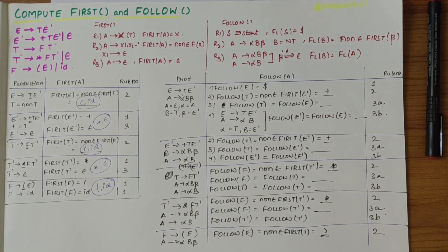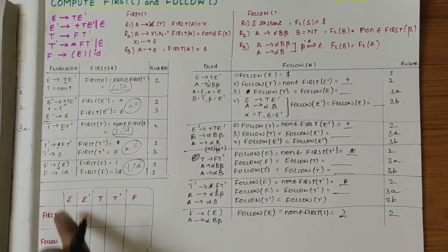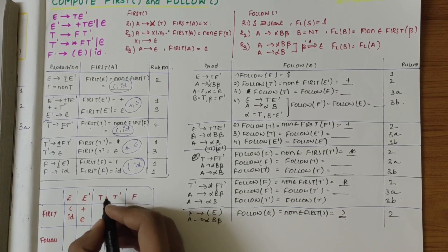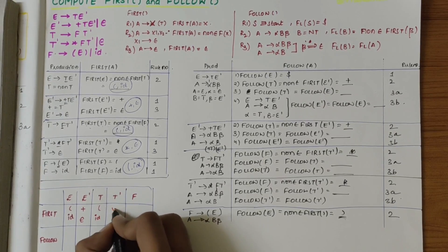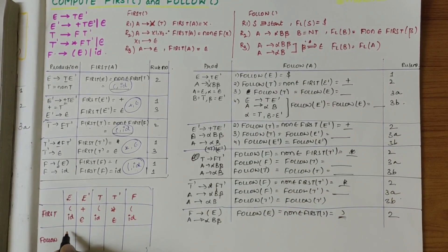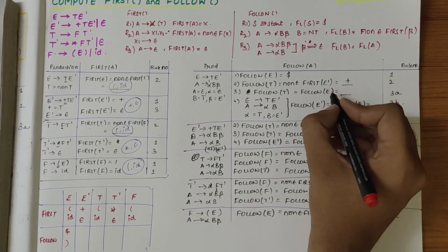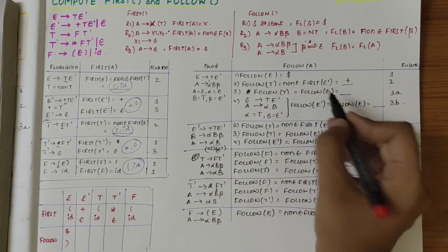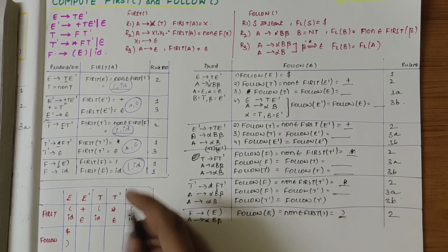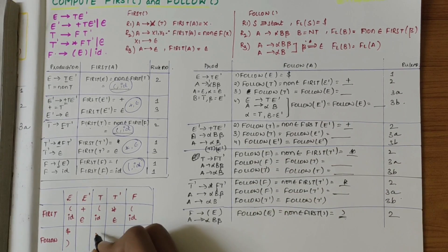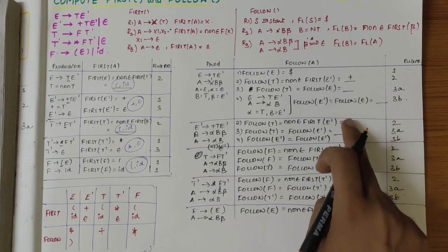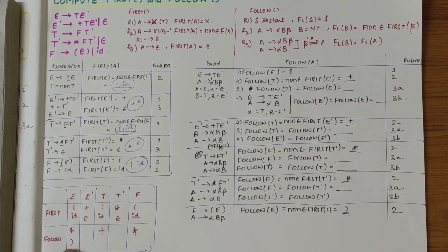Now let's fill in a table. First of E: '(' and 'id'. First of E': '+' and epsilon. First of T: '(' and 'id'. First of T': '*' and epsilon. First of F: '(' and 'id'. Follow of E: we have '$' and ')'. Next, follow of T' — T' is unknown. Follow of F comprises '*'. Follow of T comprises '+'. Whatever is in follow of E is also in follow of E'.